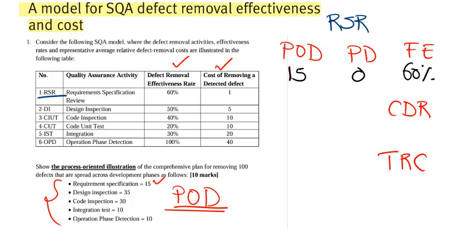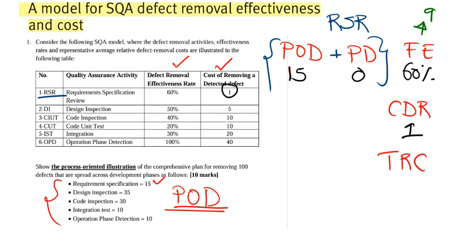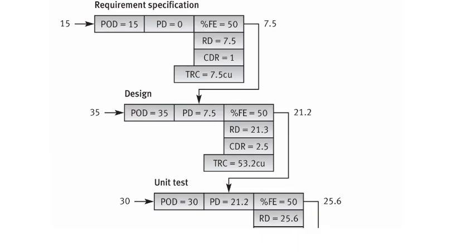To find how many defects are removed, take the total defects available — phase originated (15) plus past defects (0) — giving 15. Then 60 percent of 15 equals 9. So we've removed 9 defects. The cost of defect removal at this stage is given as 1.